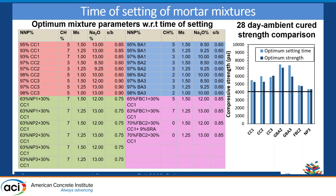The next question was whether adjusting calcium hydroxide content would change the final strength values. We retested the 28-day ambient-cured strength for the adjusted mixtures and found there was a minimum reduction in strength. Almost all mixtures still gave strength higher than 4,000 psi.